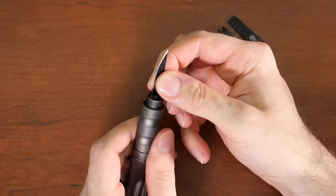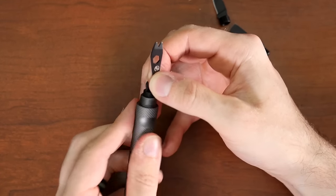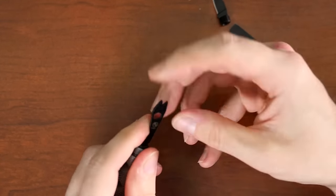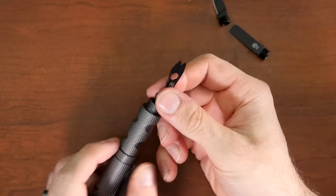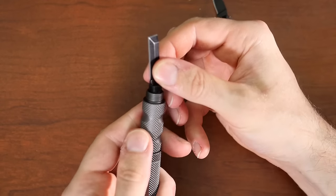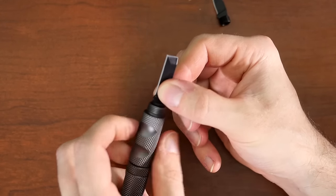Here you've got a pry bar and bottle opener. A little opening for use as a hex wrench. And then we've got this additional blade and scraper here.